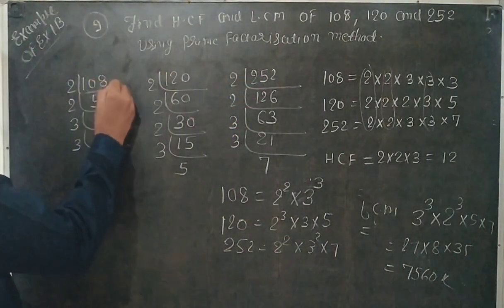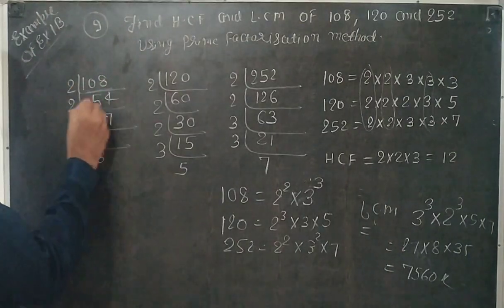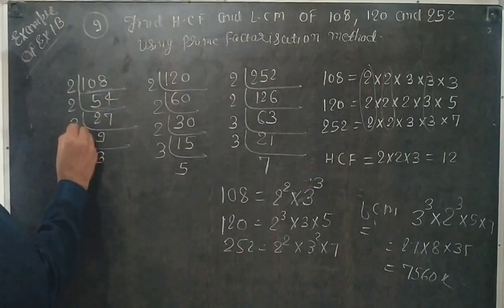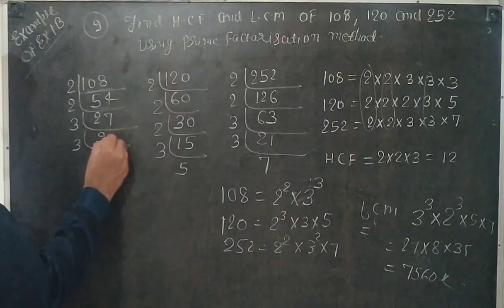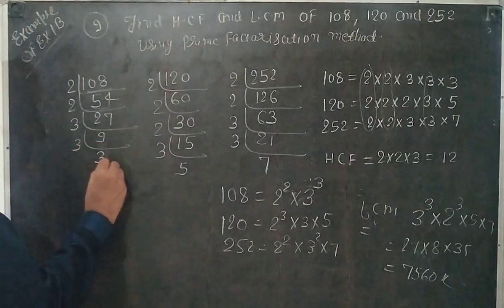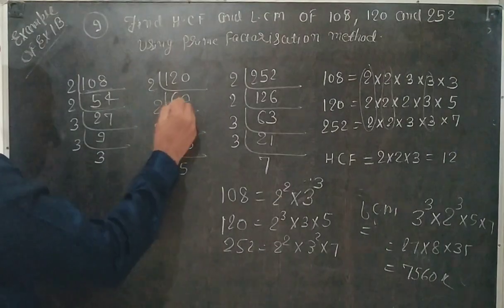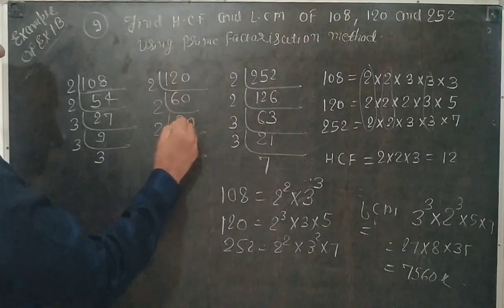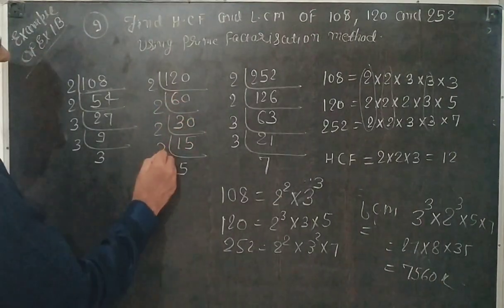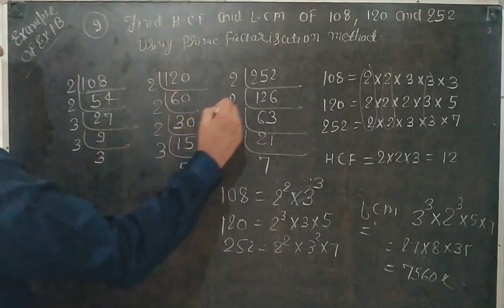First, 108 divided by 2 gives 54, divided by 2 gives 27, divided by 3 gives 9, divided by 3 gives 3. Next, 120: divided by 2 gives 60, again divided by 2 gives 30, again divided by 2 gives 15, divided by 3 gives 5.